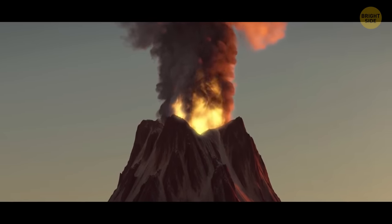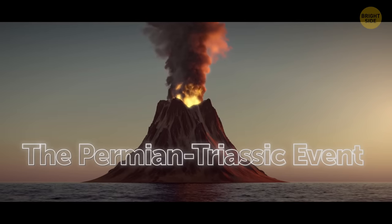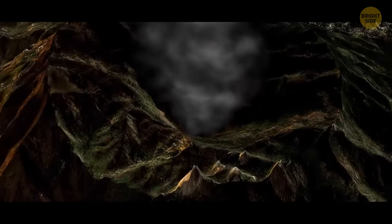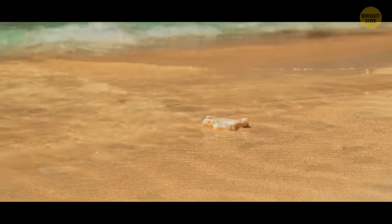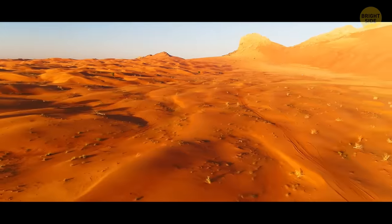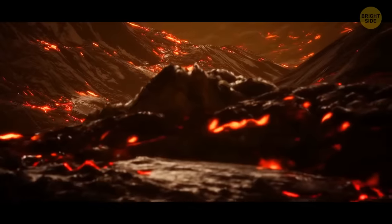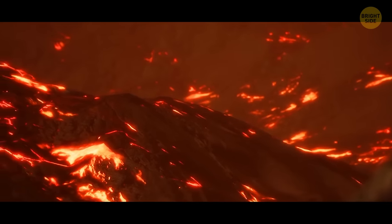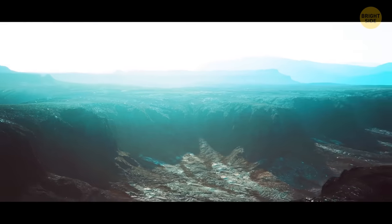But the worst this planet has ever seen was the Permian-Triassic event about 250 million years ago. 80% of marine life, 70% of land animals and plants. All gone. Volcanoes spewed out a colossal amount of lava, where modern-day Siberia is. But it affected the entire planet.